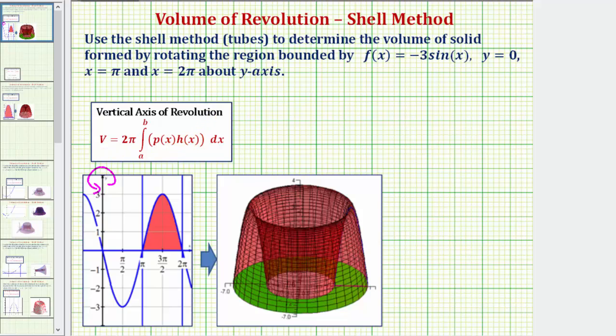To help us set up the integral, let's draw a representative rectangle, which would represent one shell or one tube of the volume. When using the shell method, we always draw the rectangle parallel to the axis of rotation. So this would be one representative rectangle, which if rotated about the y-axis would give us one shell or one tube of the volume. Now looking at our formula, the volume is equal to two pi times the integral from a to b of rho(x) times h(x) integrated with respect to x, where rho(x) is the radius function and h(x) is the height function.